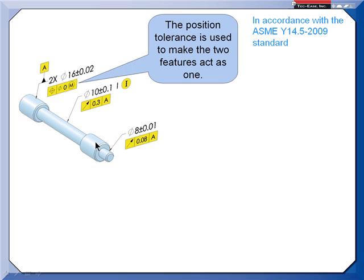When this goes in its assembly, these two features take away the most degrees of freedom. They want to be our primary datum feature. I need to tie them together to keep them in line.